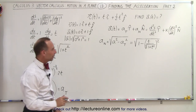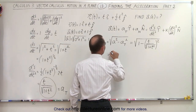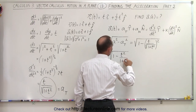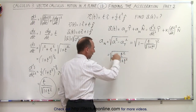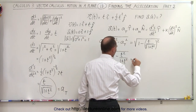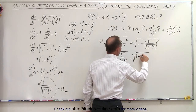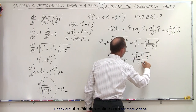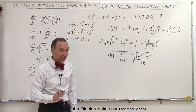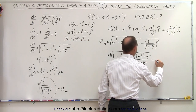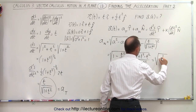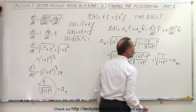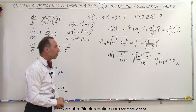We can simplify that. This is equal to the square root of 1 minus t squared divided by 1 plus t squared. Writing over a common denominator, this is equal to the square root of (1 plus t squared minus t squared) all over (1 plus t squared). Notice that t squared cancels in the numerator, so this is equal to the square root of 1 divided by (1 plus t squared), which is the normal component of the acceleration vector.